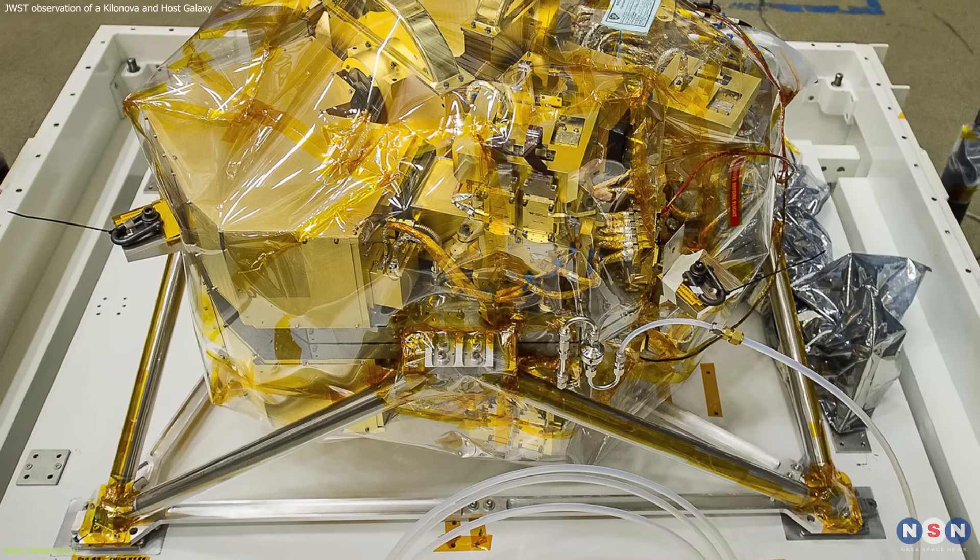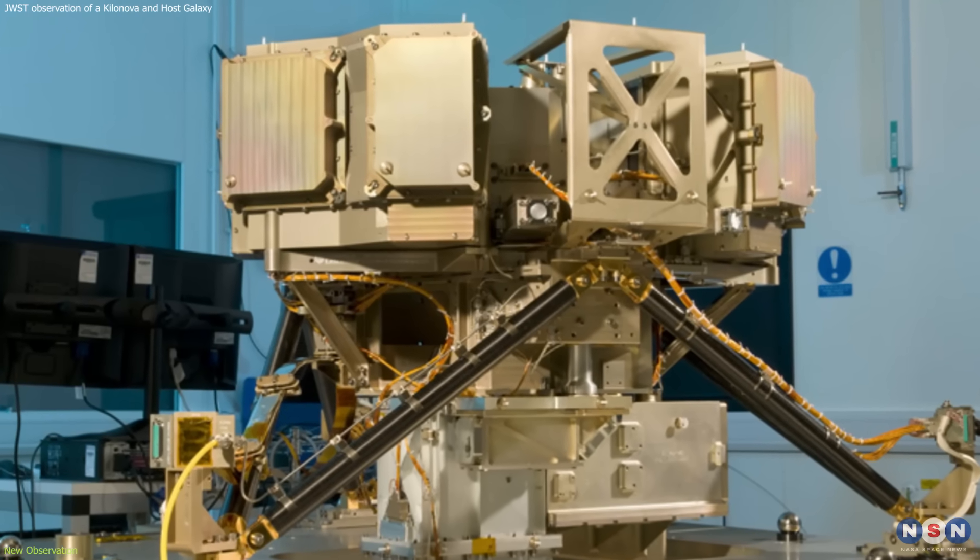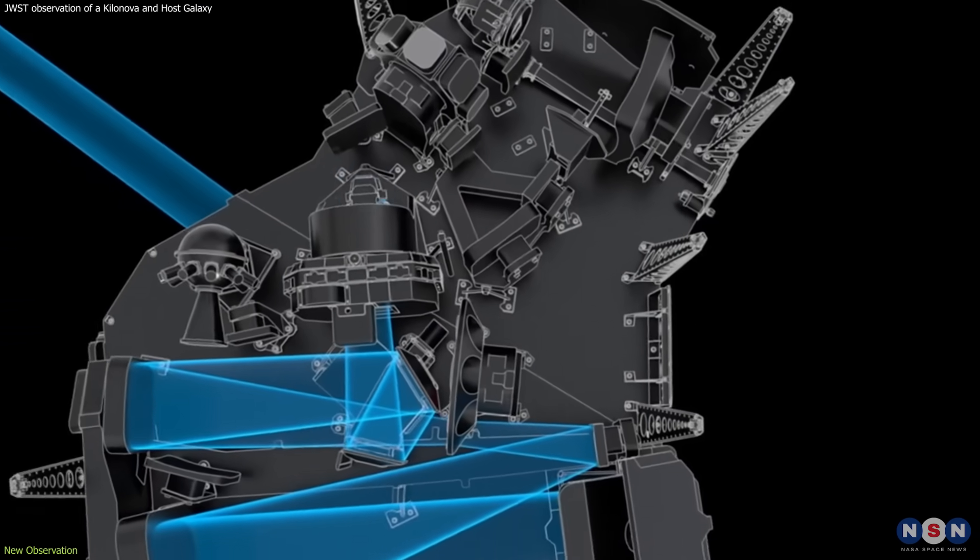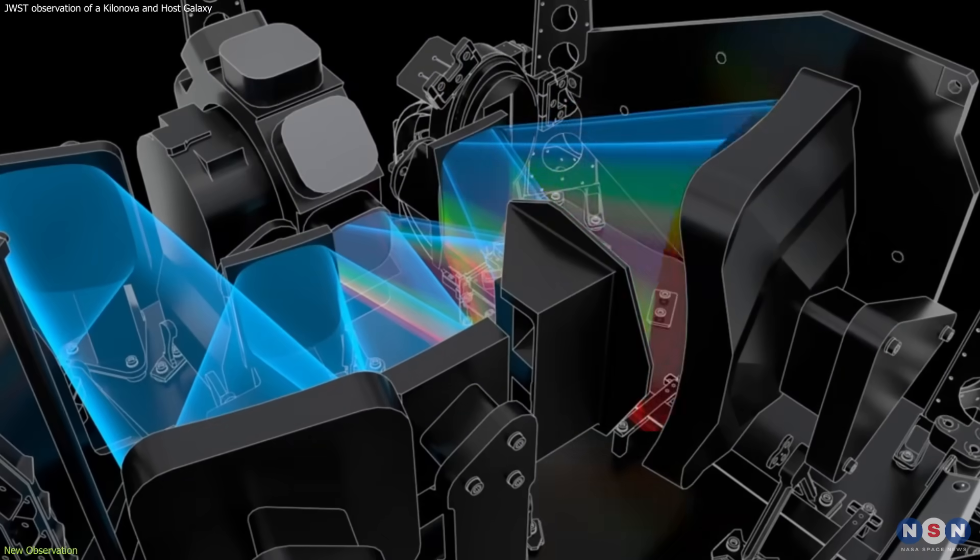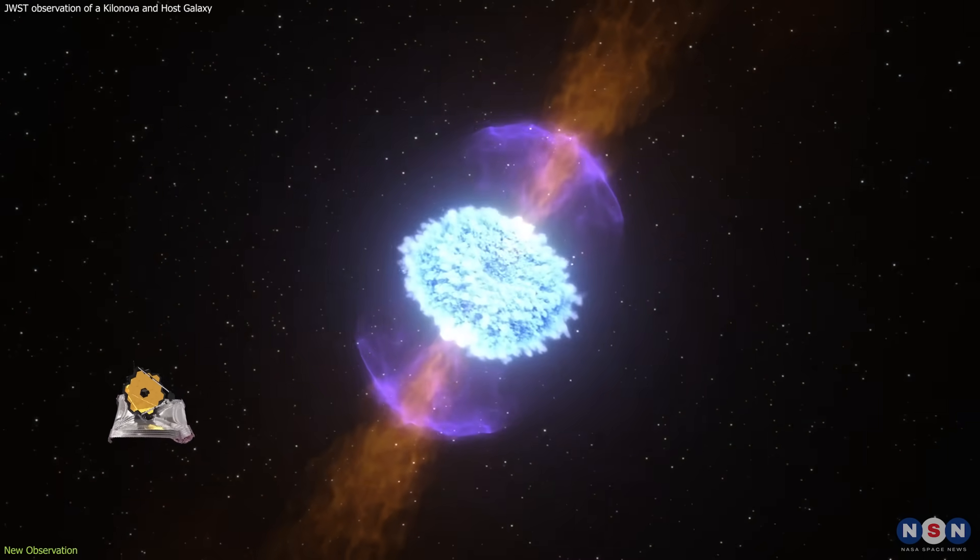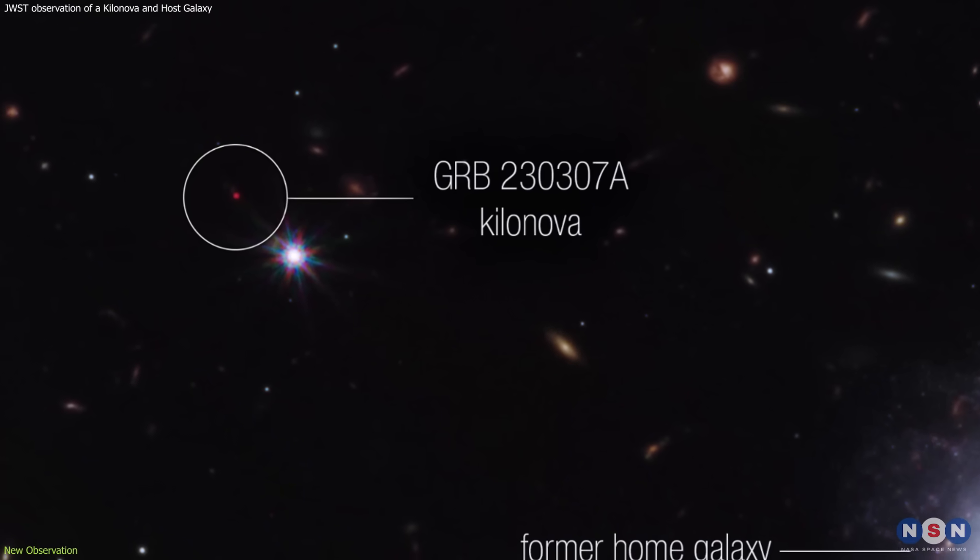Webb was able to observe the explosion within an hour after Swift's detection, using its near-infrared camera and mid-infrared instrument. These instruments can capture images and spectra of infrared light at different wavelengths and resolutions. It observed the event for about 10 hours over two days, collecting valuable data on its brightness, color, shape, and composition.